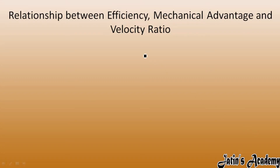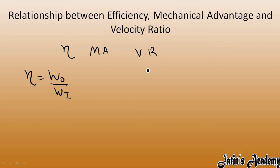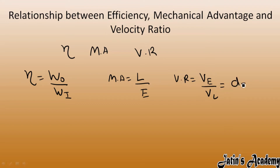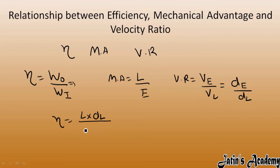Let's look at the relationship between efficiency, mechanical advantage, and velocity ratio. The formulas are: efficiency = work output over work input; mechanical advantage = load over effort; velocity ratio = velocity of effort over velocity of load, or displacement of effort over displacement of load. Work output means load into displacement of load, and work input means effort into displacement of effort.